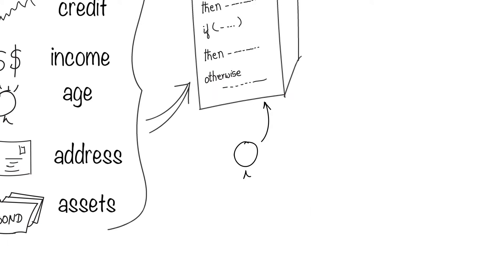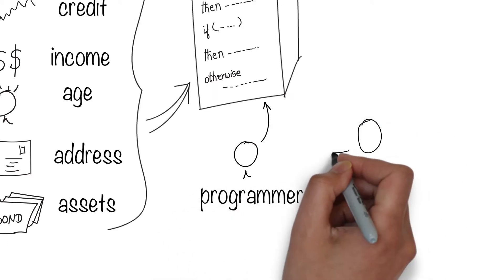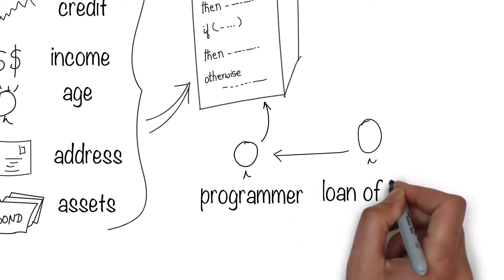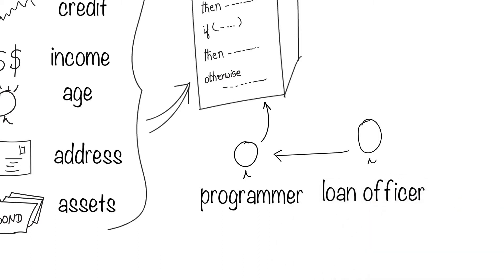These rules have been coded into the computer by programmers who have extracted that knowledge from experienced loan officers. The loan officers could make a pretty good guess on whether the loan will be repaid or not.